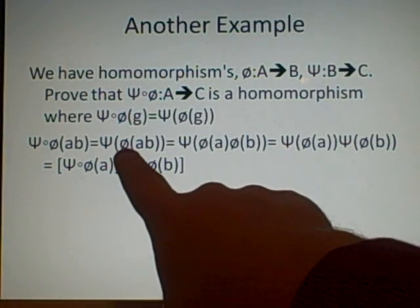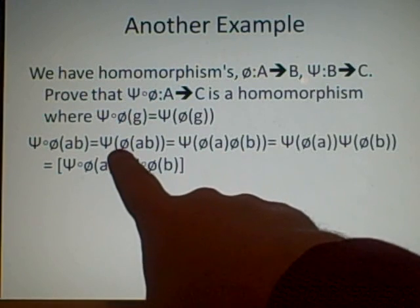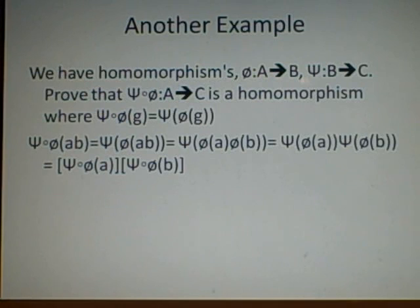And because we know that phi is a homomorphism, we know that this, phi of ab, must be equal to phi a times phi b, because if it didn't, then it wouldn't be a homomorphism.